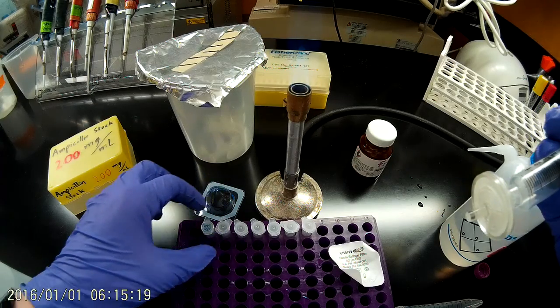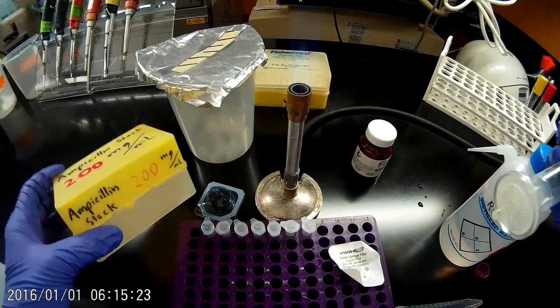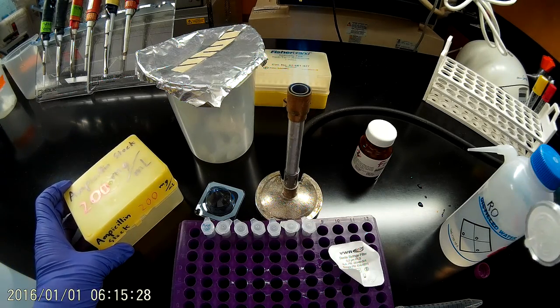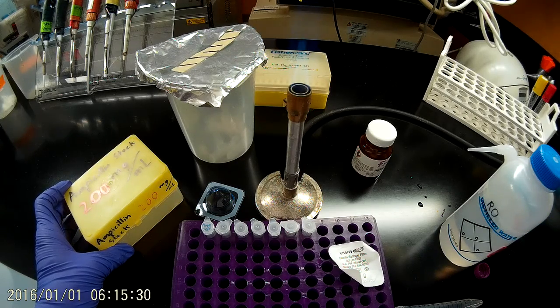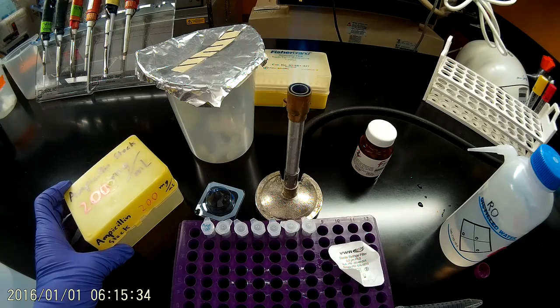After this I'm going to label the rest of these AMP 200 and I'm going to toss them in the freezer. We keep our ampicillin stocks in a box like this. It's in the back of the minus 20 freezer on the top shelf. And with that I'll head out, thank you for watching, bye.